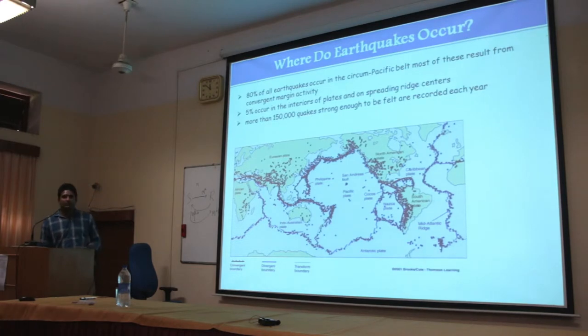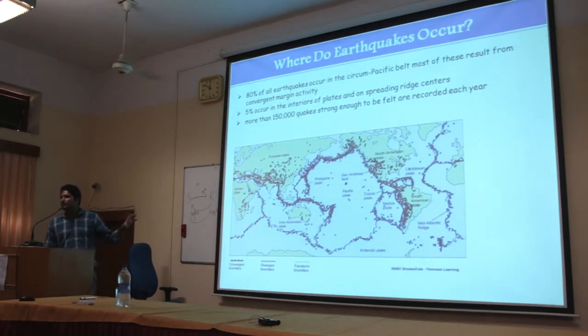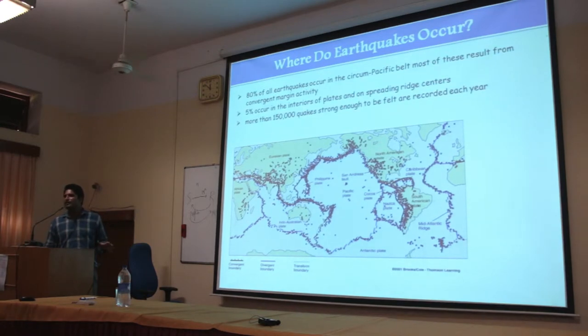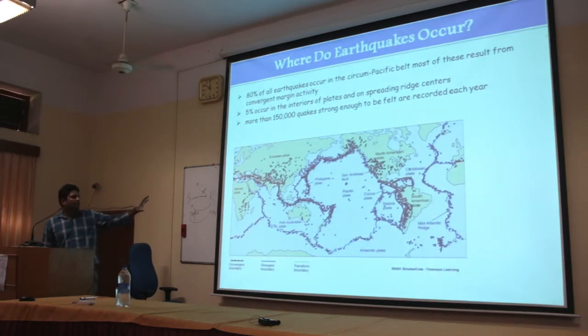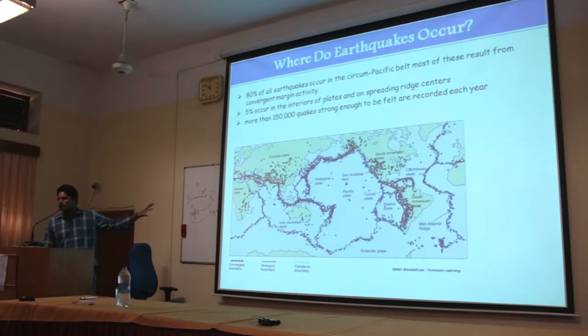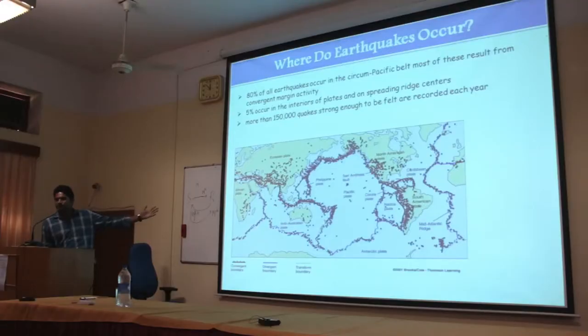Now, where do most earthquakes occur? Most earthquakes are around the rim of the Pacific Ocean. Why? Due to convergence boundaries, meaning when plates are moving towards each other. About 80% of the earthquakes are around the Pacific Ocean, and this portion is known as the Ring of Fire. The rest, about 5%, are inter-plate, meaning within the plates, like the New Madrid earthquake, and then rest are around the Himalayan belt, Sumatra, and the mid-Atlantic ridge.